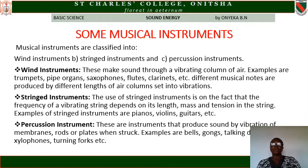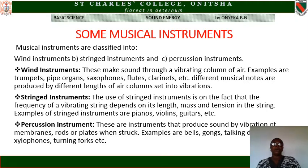Different musical notes are produced by different lengths of an air column set into vibration. String instruments work on the principle that the frequency of a vibrating string depends on its length, mass, and tension in the string. Examples of string instruments include the piano, the violin, and the guitar, as seen in the diagram.